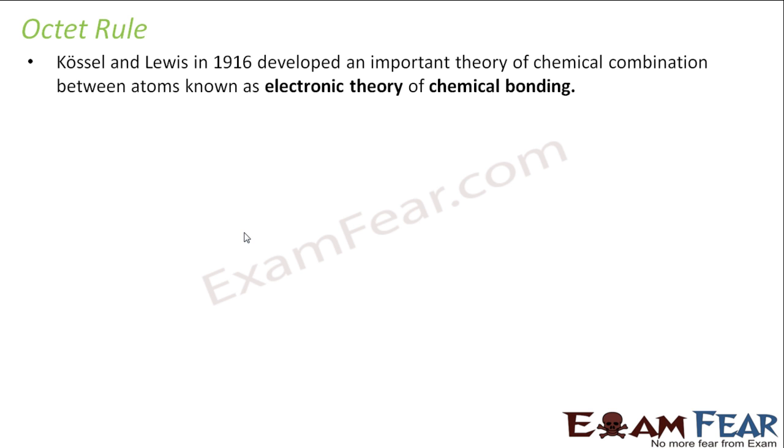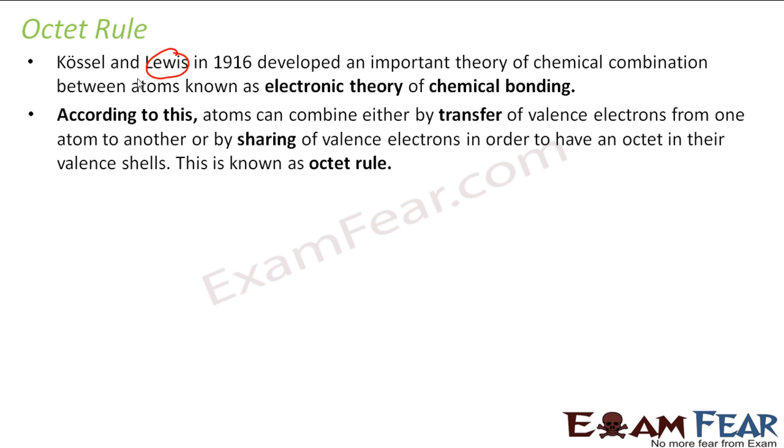There is a rule called the octet rule, devised by Lewis. According to this rule, he proposed that atoms either by transfer of electrons, as I told in the case of ionic bonds, or by sharing of electrons in the case of covalent bonds, they either transfer or share electrons just to achieve this octet because octet is a stable configuration. This rule is called the octet rule.